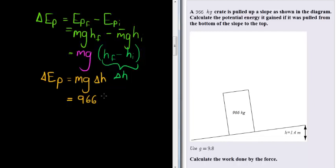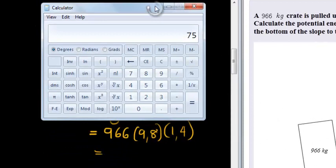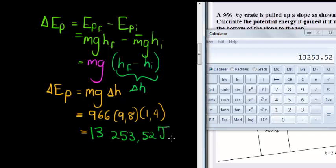966 kilograms times 9.8 times change in height, which we have as 1.4 meters. And that's a very simple calculation. Let's see. 966 times 9.8 times 1.4 tells me that the change in potential energy is 13,253.52 joules.